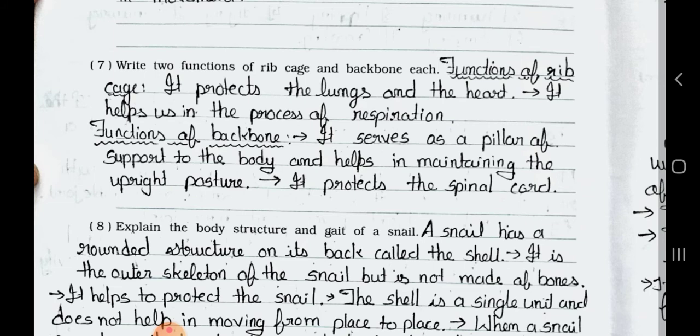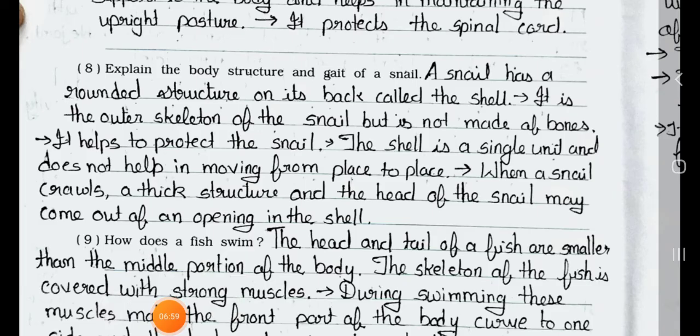Question 8: Explain the body structure and gait of a snail. A snail has a rounded structure on its back called the shell. It is the outer skeleton of the snail but is not made of bones. It helps to protect the snail. The shell is a single unit and does not help in moving from place to place. When a snail crawls, a thick structure and the head of the snail may come out of an opening in the shell.